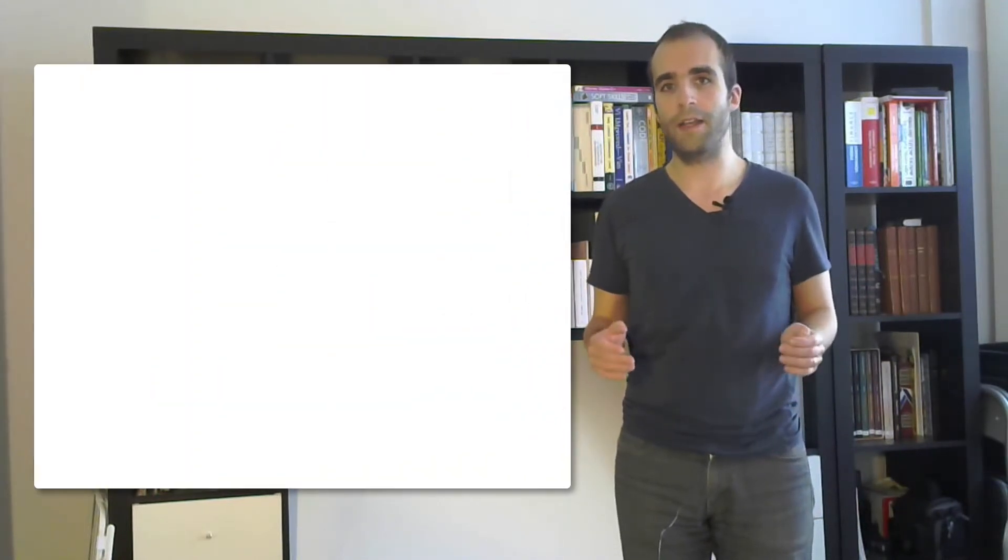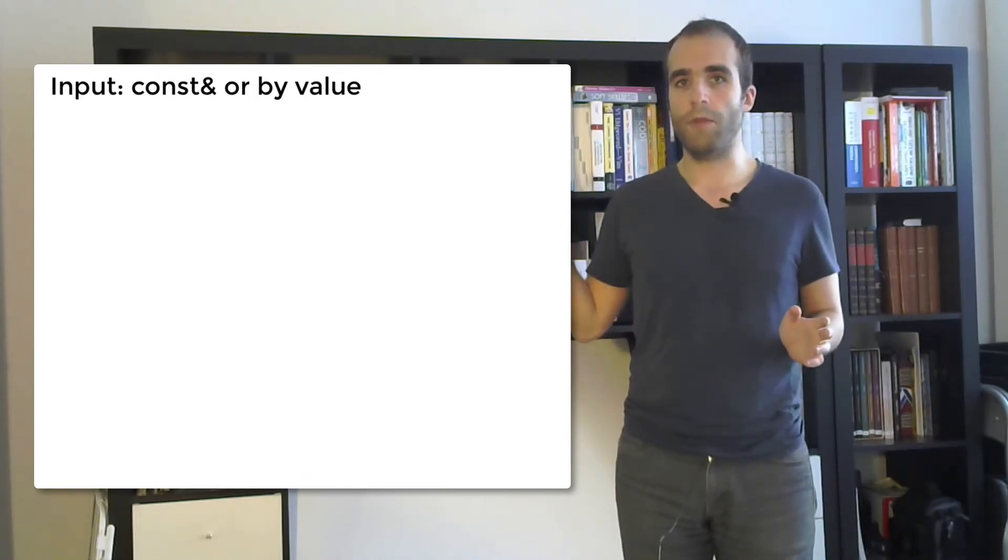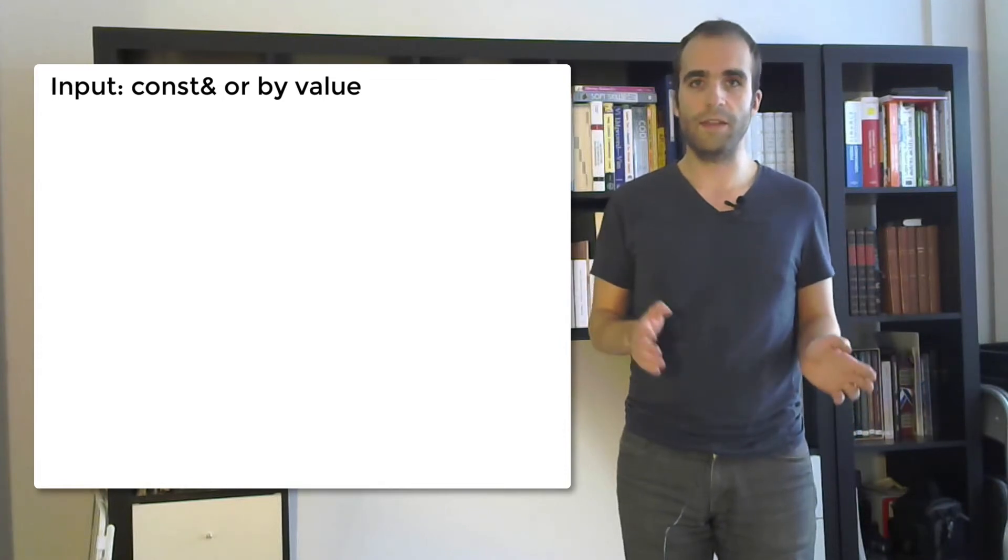Before getting into how to make our functions functional, let's see how to show inputs and show outputs in a function. Inputs in C++ are typically reference to const for the general case. For the specific case of integers, doubles, floats and such basic types, then we pass them by value. So inputs are either reference to const for the general case or pass by value for basic types, native types.